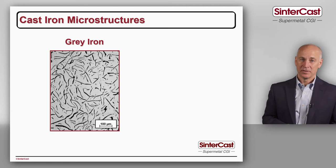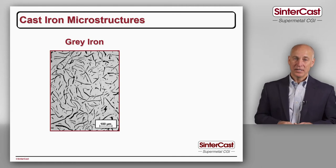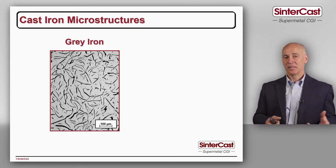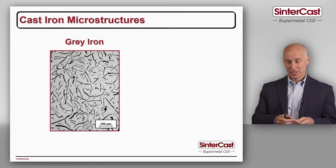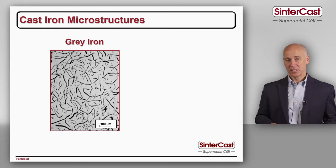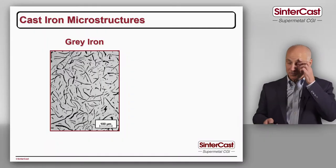The other benefit of the graphite is that as carbon particles come together during solidification there's a 9% volume expansion. We rely on this expansion to offset the contraction of the iron and to squeeze out any porosity or shrinkage defects that might occur. So a lot of good things.